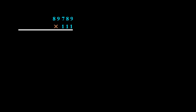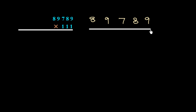Now one more example. We have to multiply 89789 with 111. We draw a line and begin. First, we write down 9 here. Then we add 2 numbers: 8 plus 9 is 17 — write 7, carry 1.